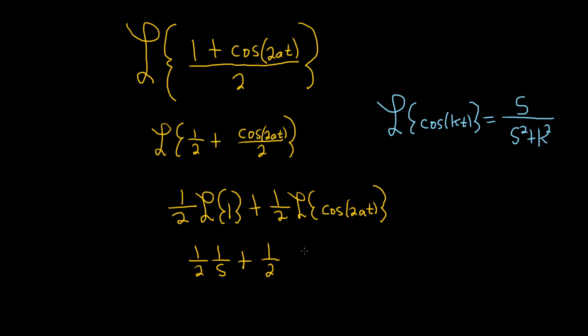So here, it would be s, because cosine has the s. S over s squared plus, and here's the tricky part: k equals 2a. So this is 2a squared. That's your k - the 2a.